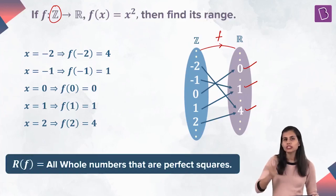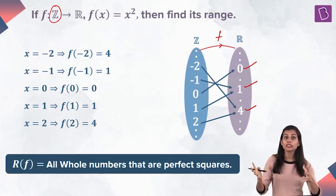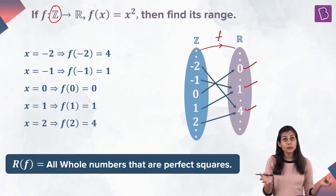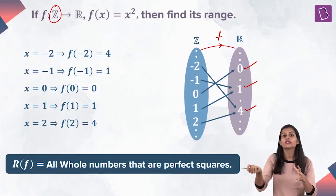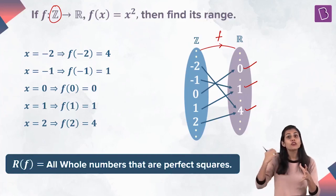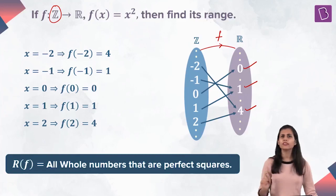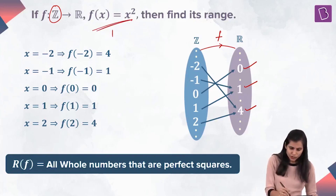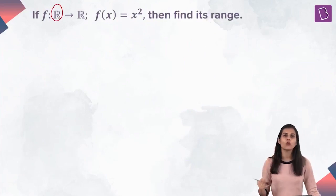How is the previous conclusion different from this one? The machine is the same — the square function. When you input natural numbers, the output is all natural numbers which are perfect squares: 1, 4, 9, 16, 25, and so on. When you input integers, the output changes by just one value — 0 is added. Now you start getting whole numbers which are perfect squares. Try to recall the actual entire complete domain of the square function. The square function is a polynomial in x, so its actual domain is the set of all reals.